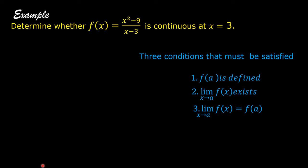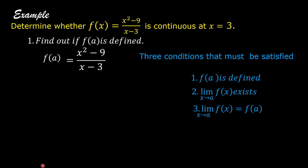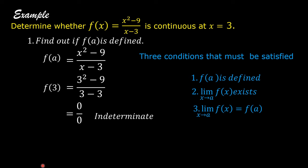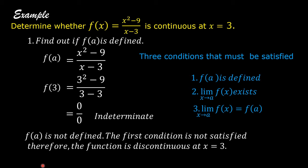If one or more of these conditions fails to hold at a, then the function is discontinuous at point a. First step: find out if f(a) is defined. f(x) = (x² - 9) / (x - 3), and a = 3. So f(3) = (3² - 9) / (3 - 3) = 0/0. And 0/0 is indeterminate, so f(a) is not defined. The first condition is not satisfied.